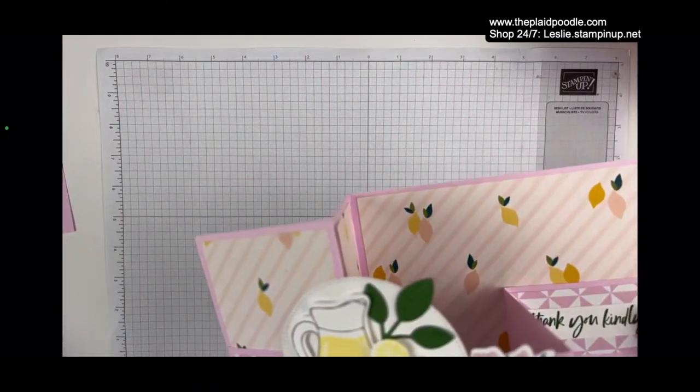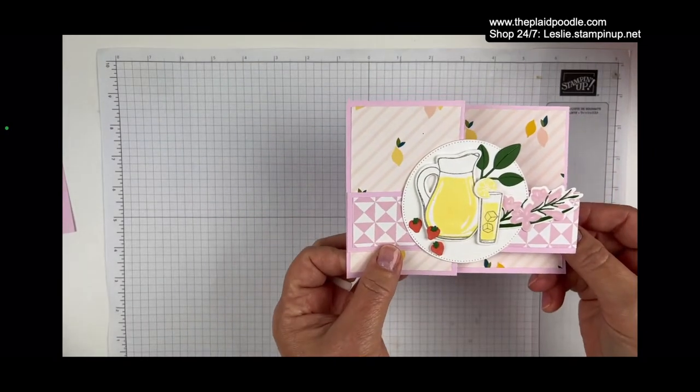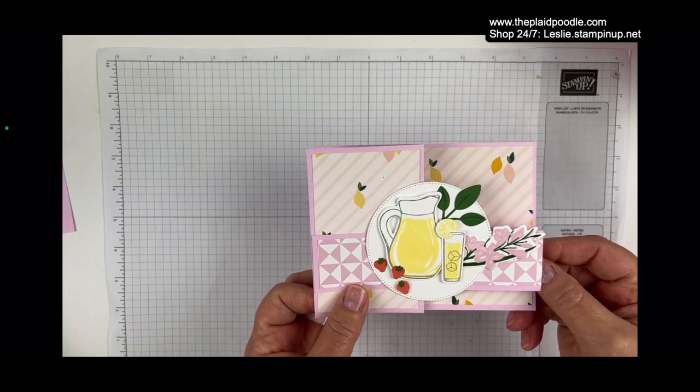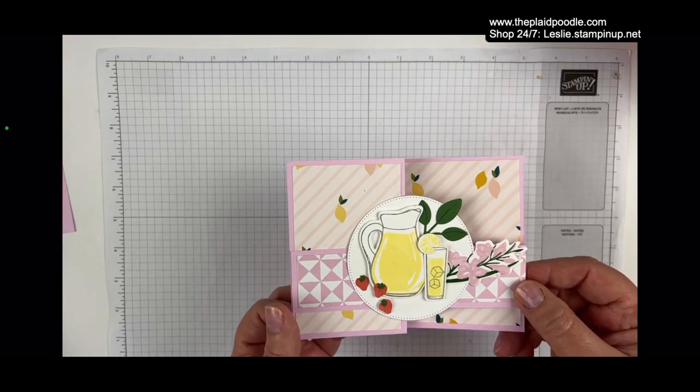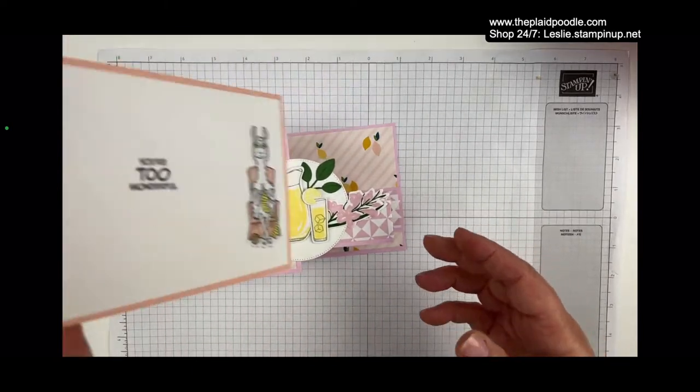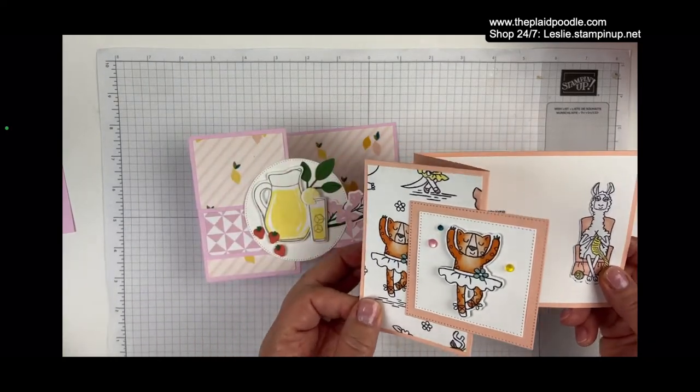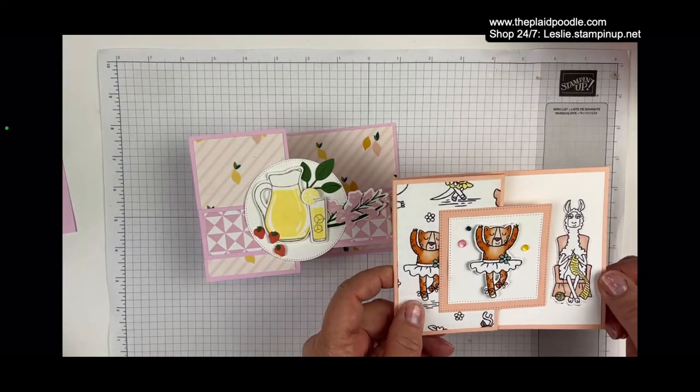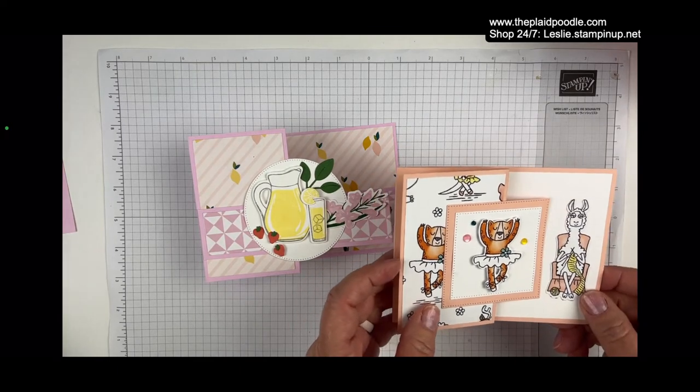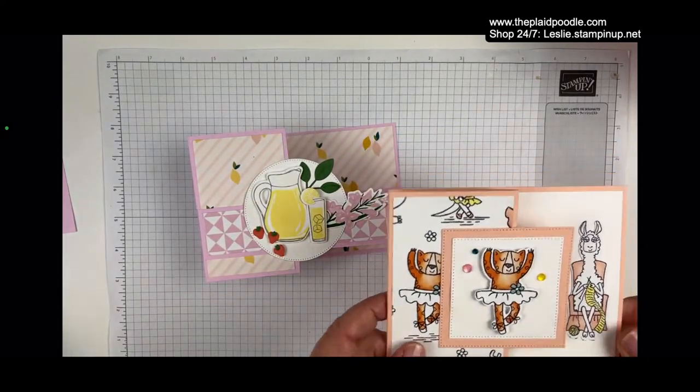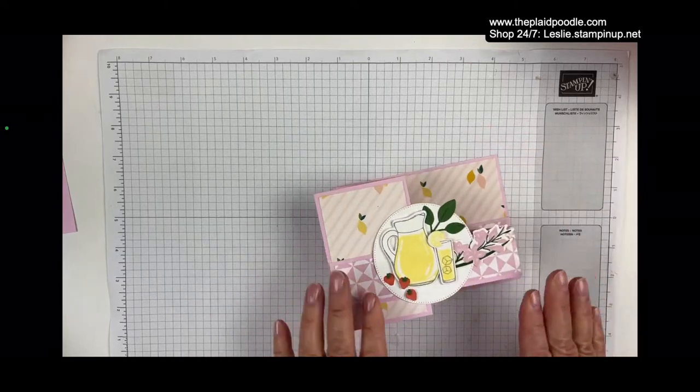I'll have to show you the paper on here. It has lemons on it, so it was perfect for this project. Both of my little granddaughters—one granddaughter's in dance and one is in gymnastics. I'm always watching them at practice or at rehearsals. So I'll have to send these to my granddaughters. Anyway, let's get back to the project.